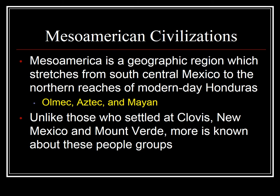These Mesoamerican civilizations were by far the most advanced people in all of the Americas. There's a lot of rich, deep cultural history in North American tribes, but as far as importance goes politically, culturally, and architecturally, one really has to say that the Olmec, the Aztec, the Maya, and the Inca had much more influence than, say, the Mississippian. Mesoamerica is a geographic region stretching from south-central Mexico to the northern reaches of modern-day Honduras. You will not see the Inca listed there — they are South American, along the Andes Mountains in Peru.